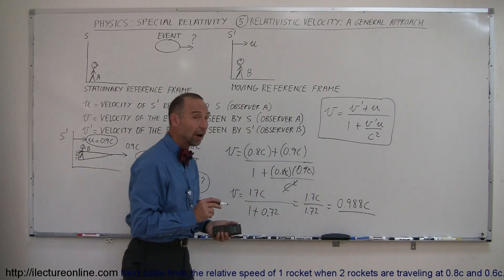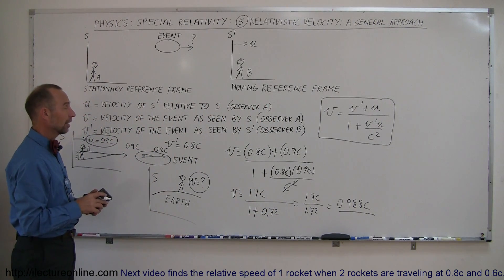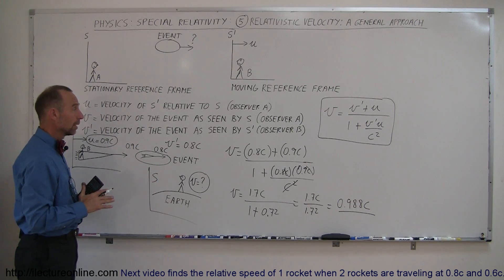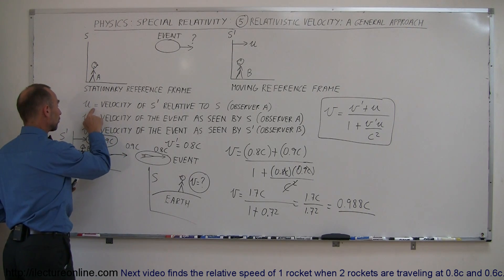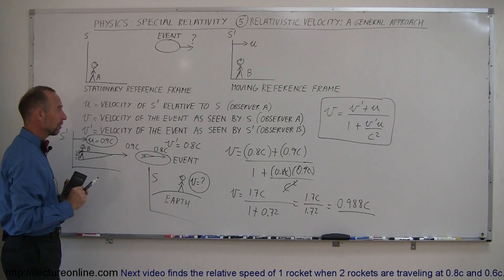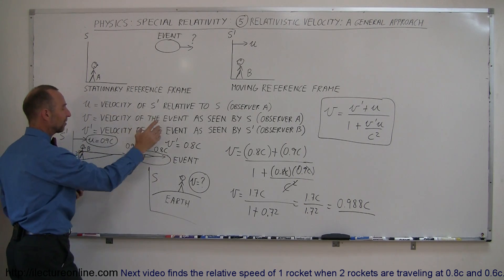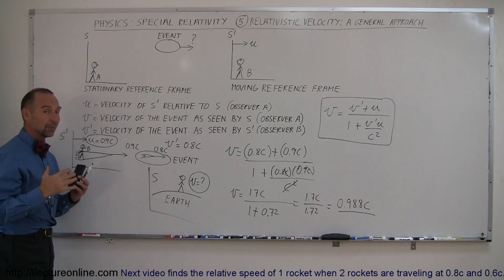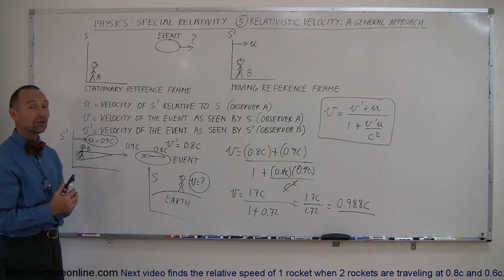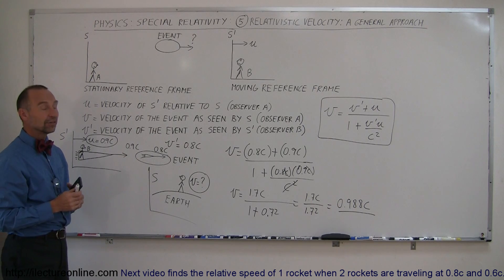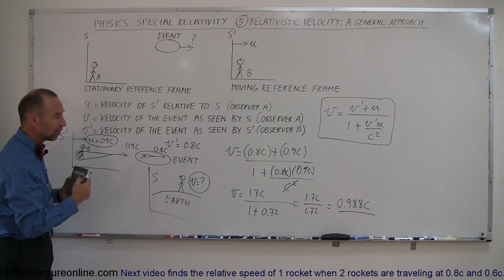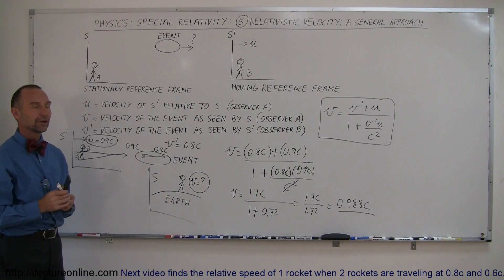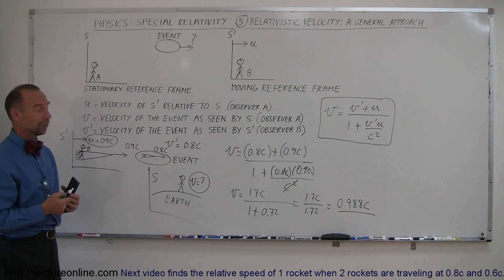That is the velocity of the event as seen by the stationary observer on Earth — 0.988C. That's how you deal with relativistic velocities. As a summary, remember we have three velocities: the velocity of the moving reference frame relative to the stationary frame, the velocity of the event as seen by the stationary observer, and the velocity of the event as seen by the moving observer. Once you identify which is which and apply the equation, it's fairly straightforward. I'll show a few more examples in the next video, including cases where you need to apply the equation twice. Stay tuned — thank you.